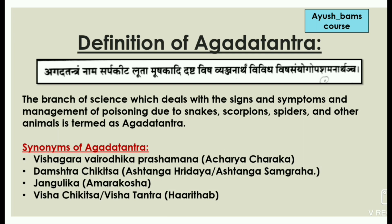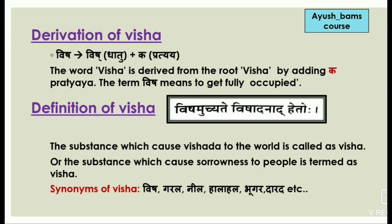The synonyms of Agadha Tantra are Vishagara Vairodhika Prashamana — this name was given by Acharya Charaka. According to Astanga Hridaya it is termed as Damstra Chikitsa; according to Amarakosha it is called Jangulika; and according to Harita it is called Visha Chikitsa or Visha Tantra. Derivation of Visha: the word Visha is derived from the root 'visha' by adding 'ka pratyaya' to it. The term Visha means to get fully occupied. The synonyms of Visha are Garala, Neela, Halahal, Bhugar, Darad, etc.